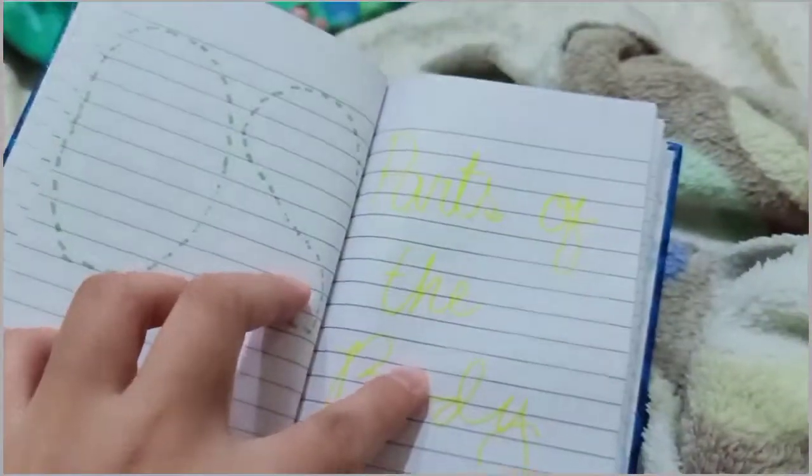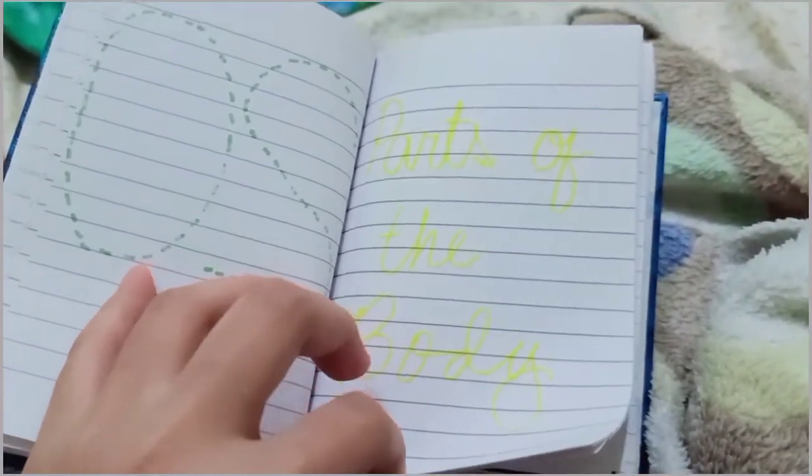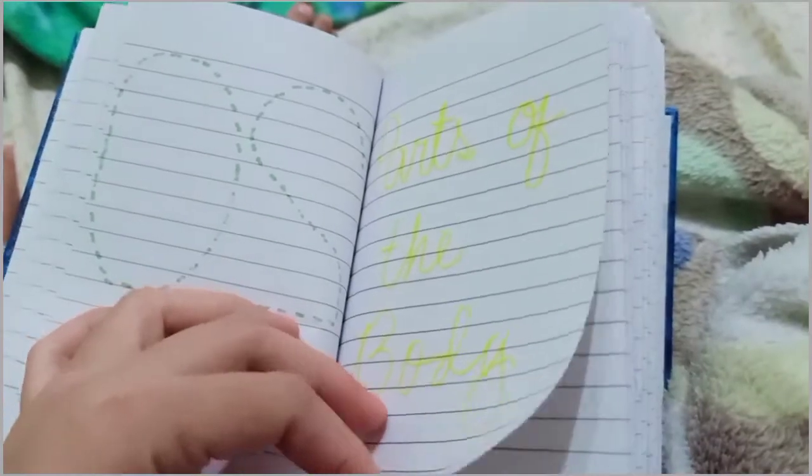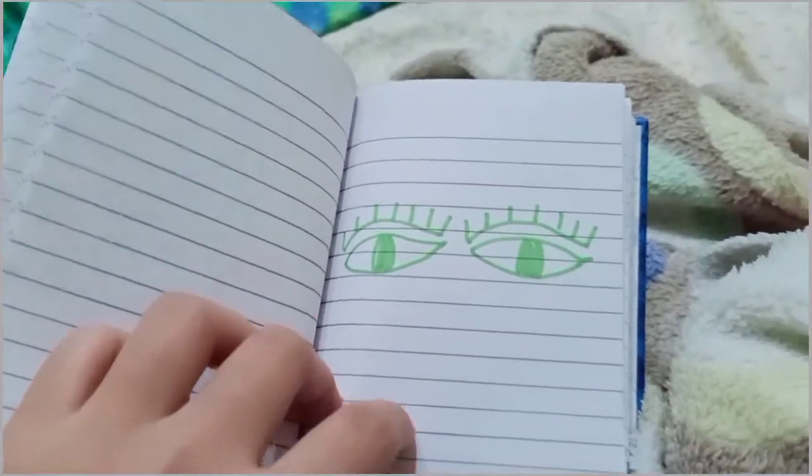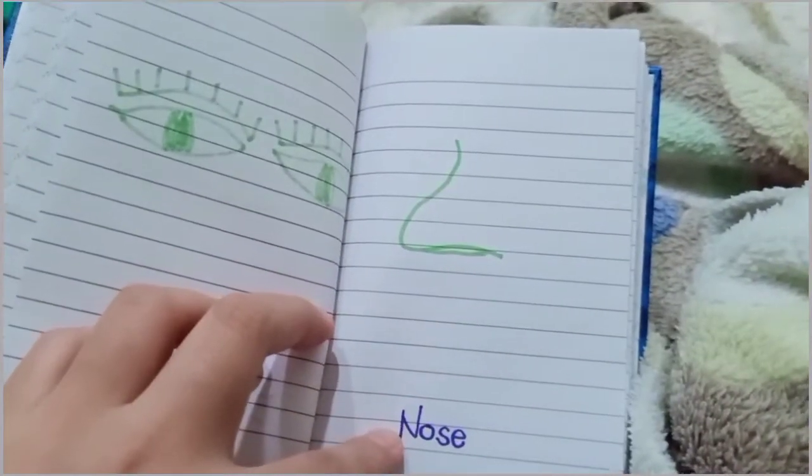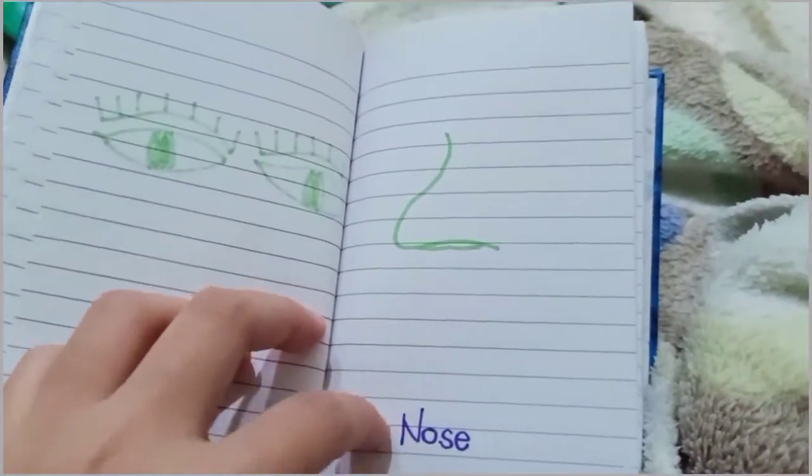Parts of the body. Okay. Sorry for Mommy's drawing, okay? What is this? Eyes. Eyes. Very good. This one? Nose. Nose.